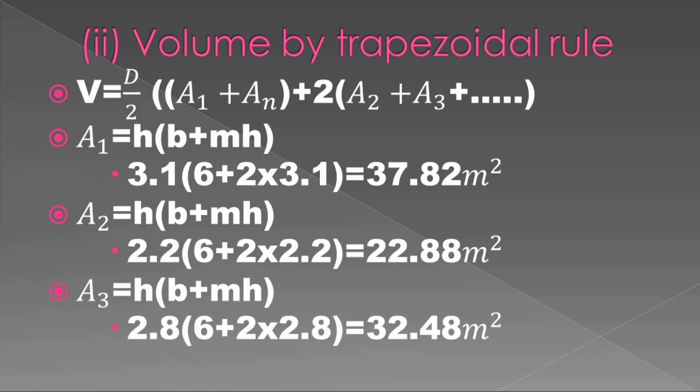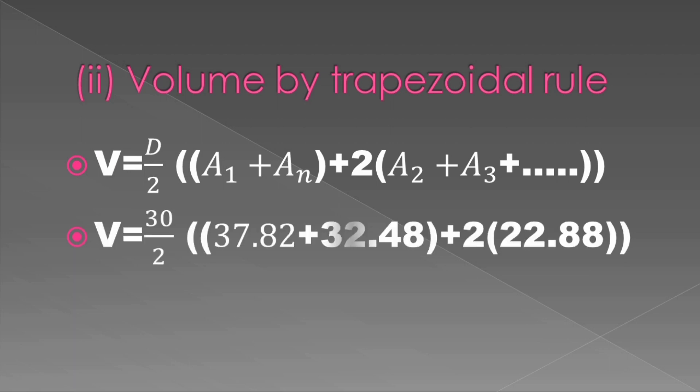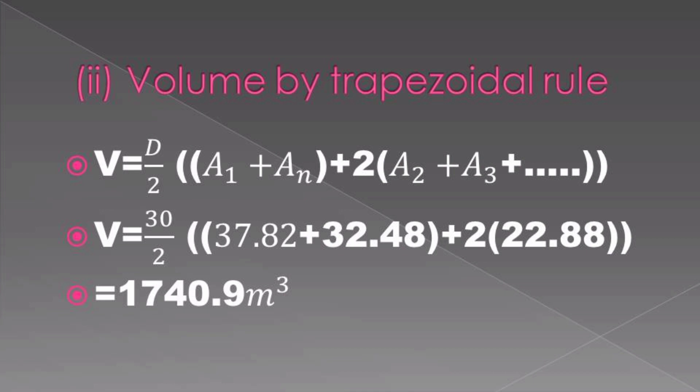After which we apply the formula for finding the volume using the trapezoidal rule. Having only three areas, the working becomes easy. The volume will be V = (30/2) × [(A₁ + A₃) + 2A₂], and we get our answer as 1740.9 cubic meters. Remember, volume is in cubic meters.